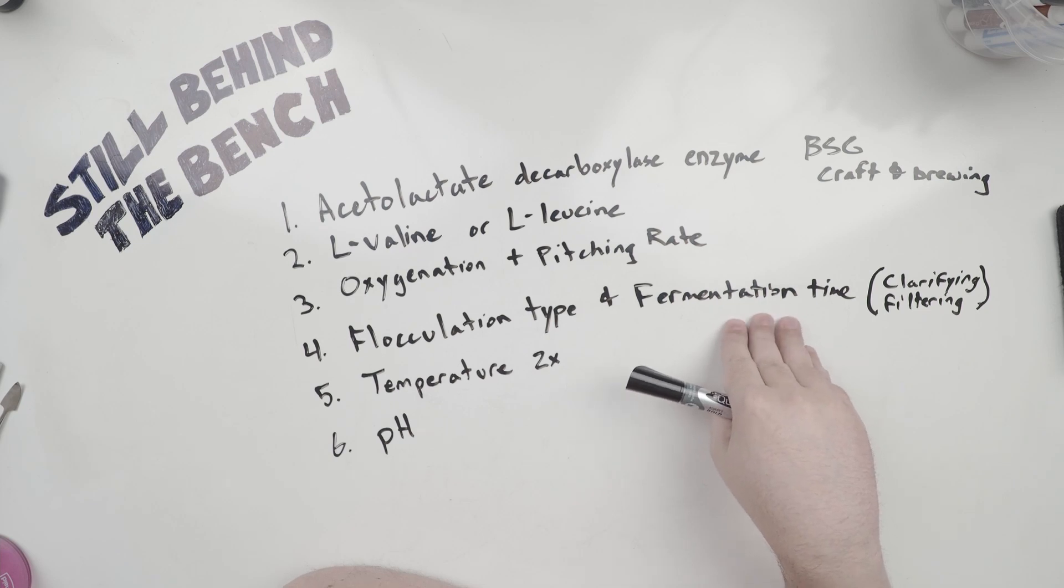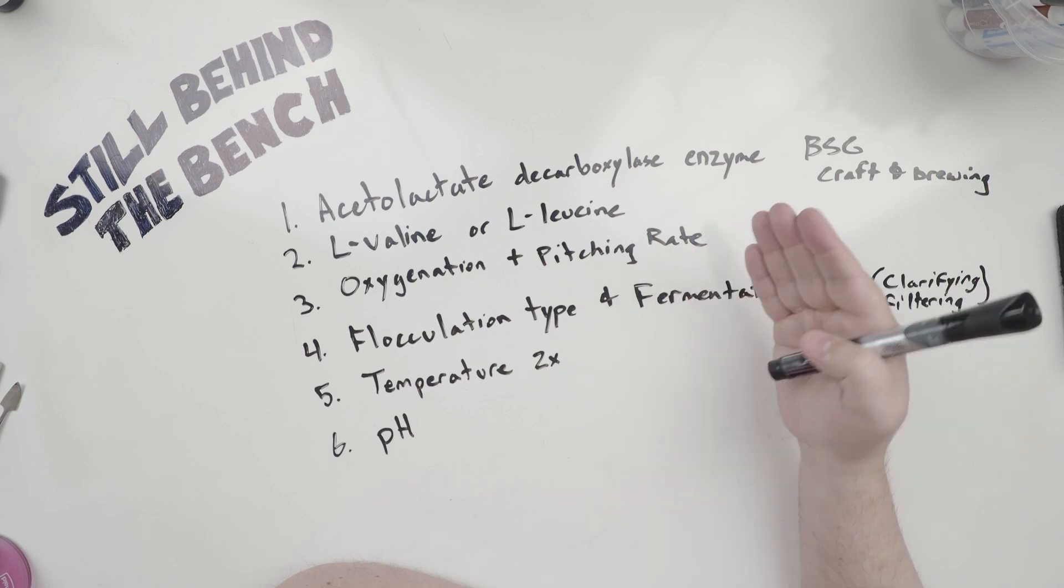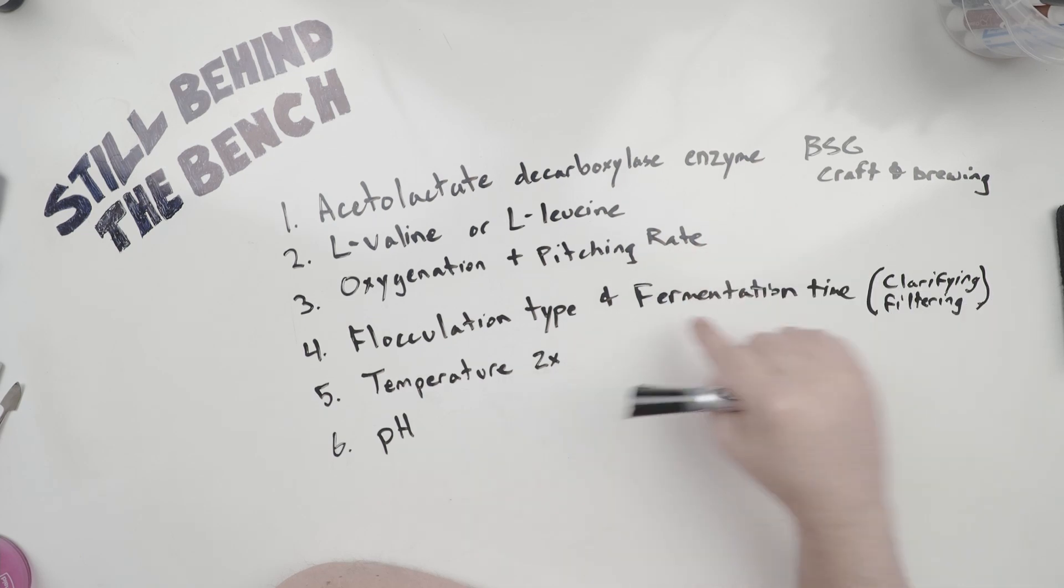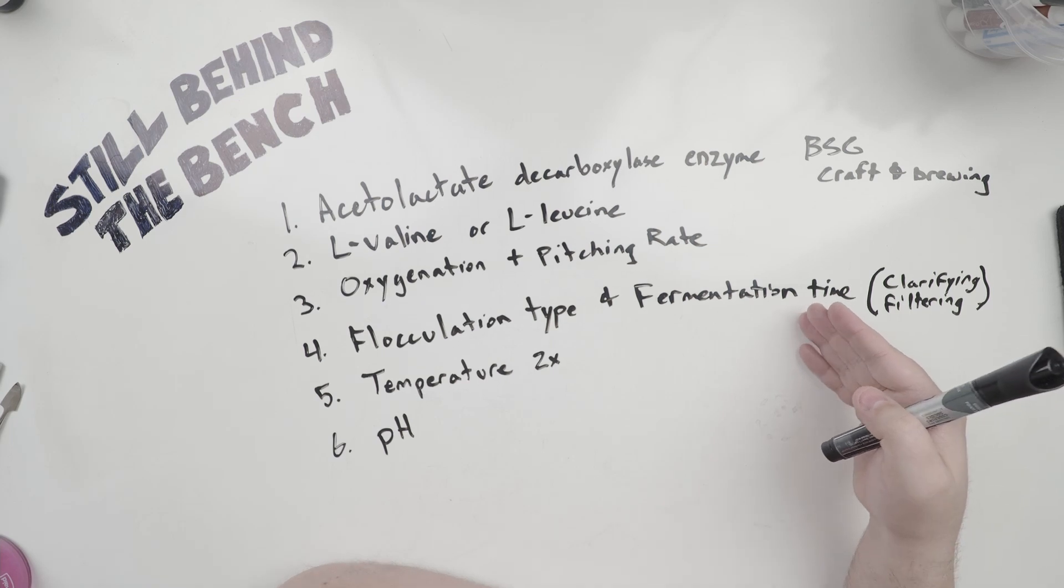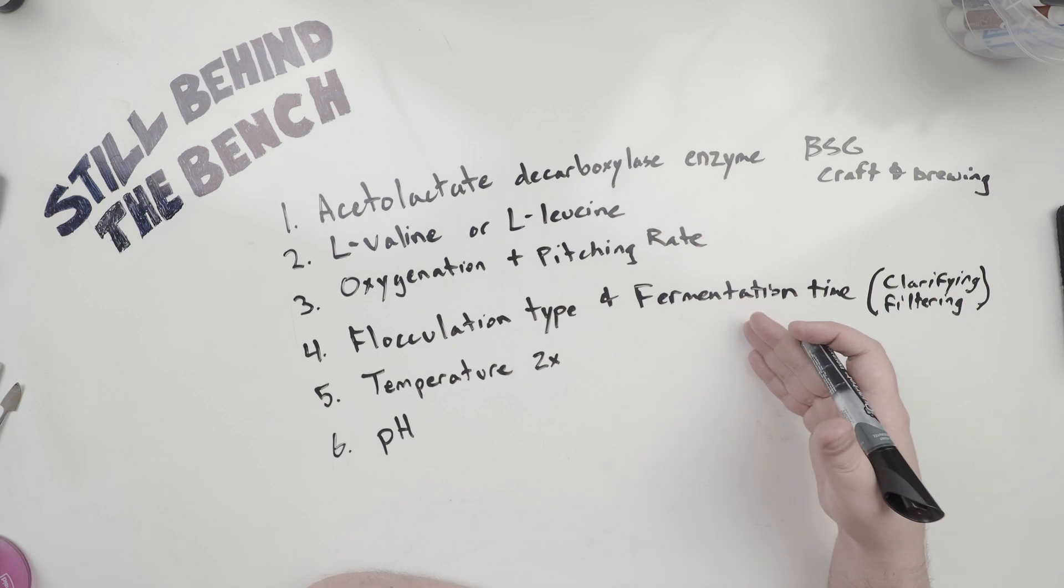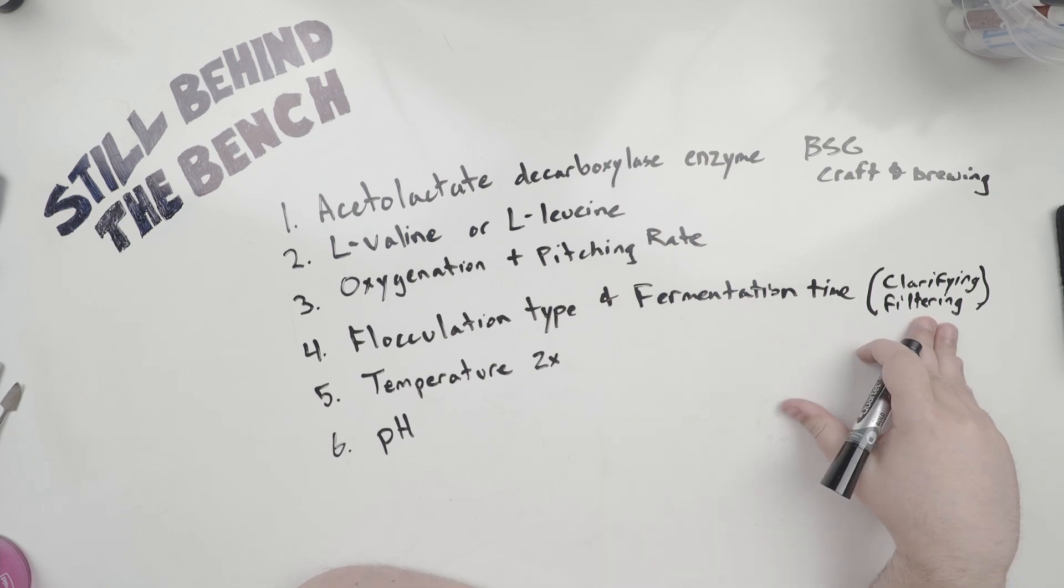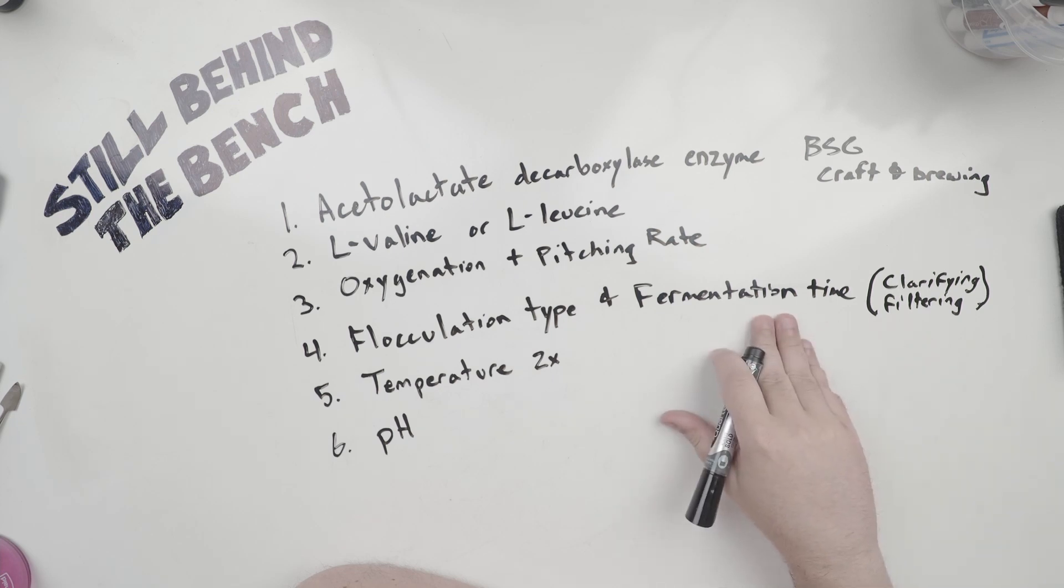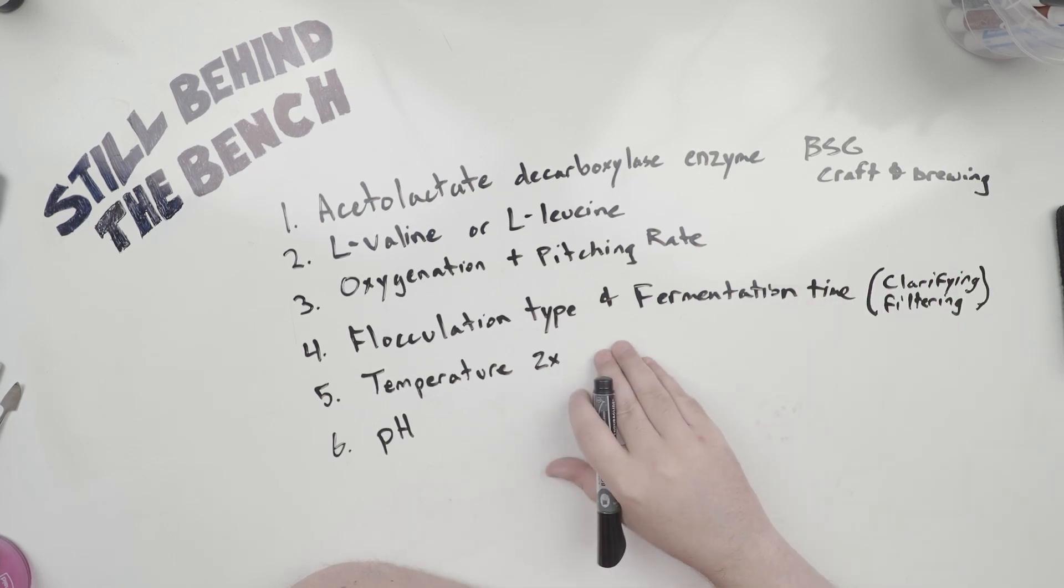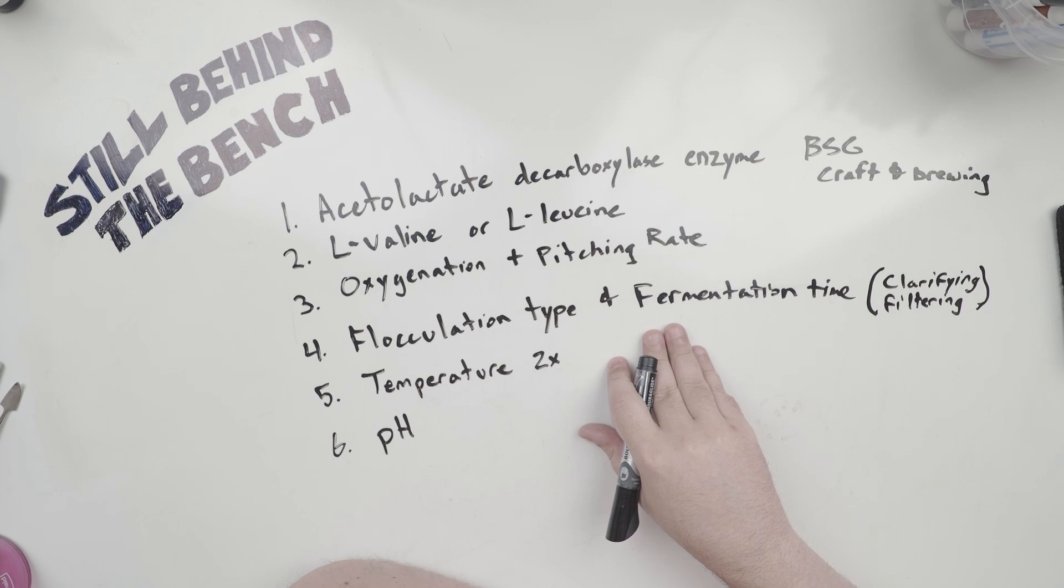But if you have a high flocculating yeast, this typically won't happen enough because it all clumps together and settles at the bottom too quickly. And so you end up with more free diacetyl in the wash. This is also where fermentation time comes into play, because the more time the yeast has in contact with that free diacetyl in the wash, the more it will uptake and remove it from the wash. So a high flocculating yeast and a short fermentation time will lead to higher diacetyl levels. A low or medium flocculating yeast with long fermentation times, or even taking a few days after fermentation ends just to let it use up that diacetyl, in the brewing world it's called a diacetyl rest, that will lead to lower or even no diacetyl level. This is where clarifying and filtering can come into play as well.